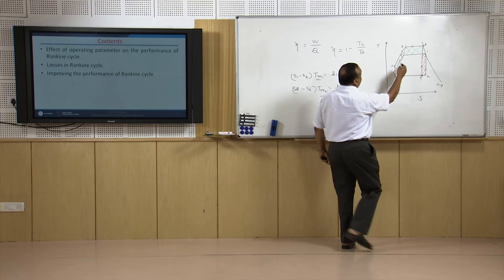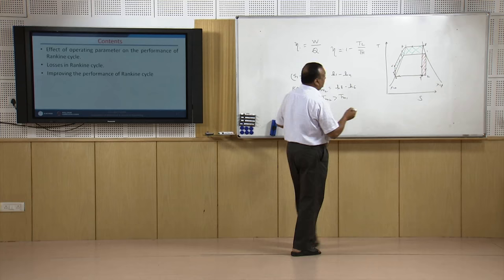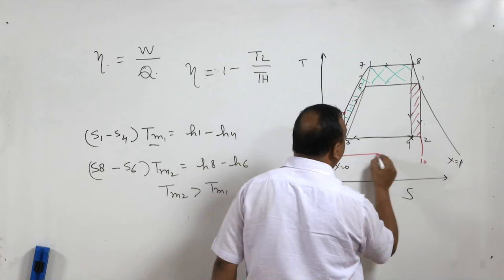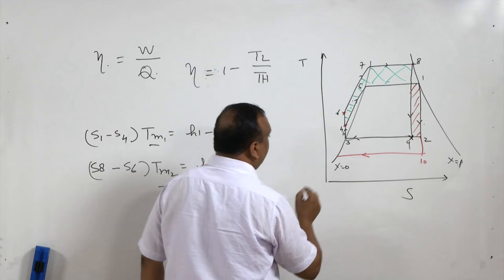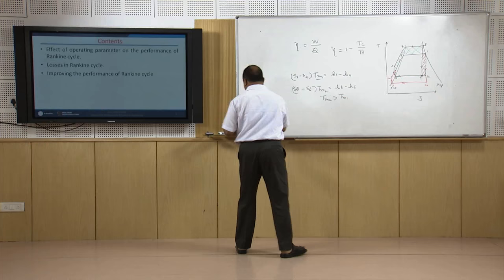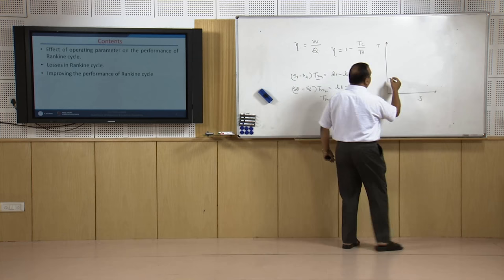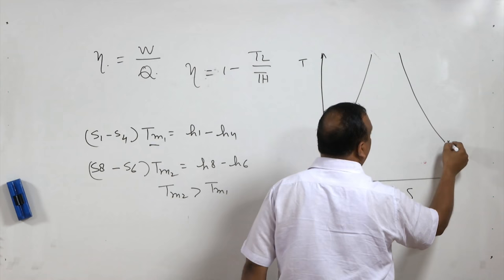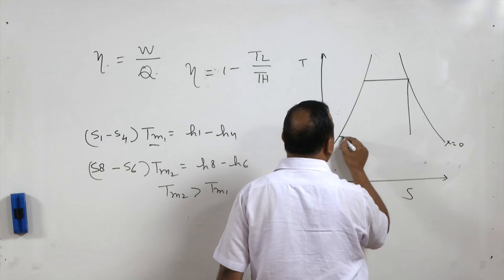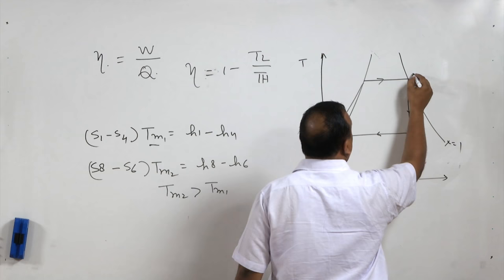Another approach: instead of increasing pressure in the boiler, we reduce pressure inside the condenser. When condenser pressure is reduced, instead of getting state 2 we get state 10, then condense the entire vapor, increase pressure, and follow the new process — states 10, 11, 12 — then 12 to 4 to complete the cycle. On a redrawn diagram with the original cycle (x=0 to x=1), the states are relabeled 1, 2, 3, and 4.